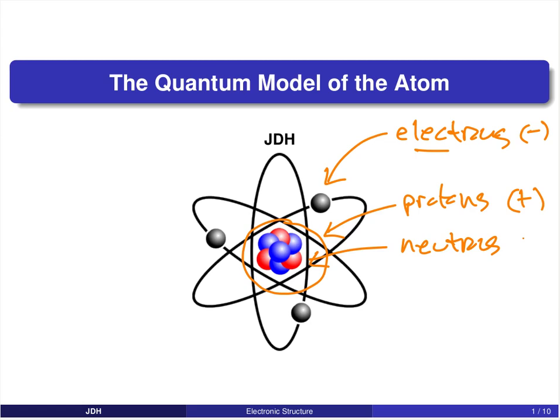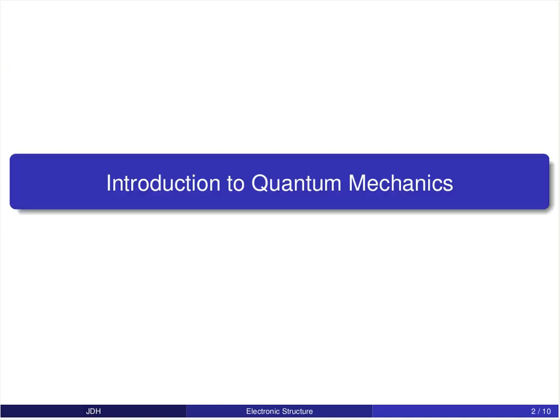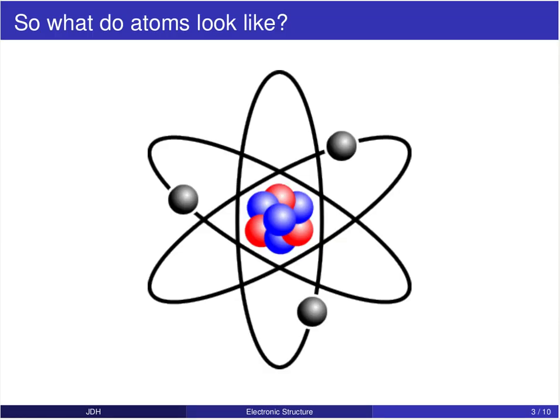That's going to be our goal. In order to achieve that goal we're going to need to use a branch of physics called quantum mechanics. Quantum mechanics is going to be the physical theory that's going to provide the basic answer to what atoms actually look like.